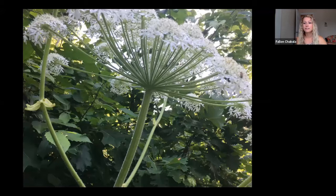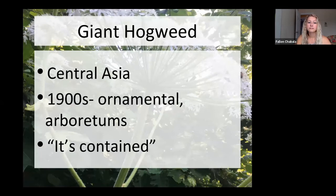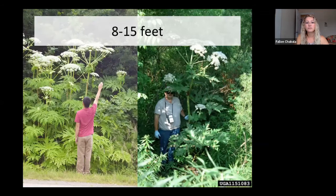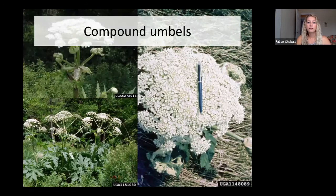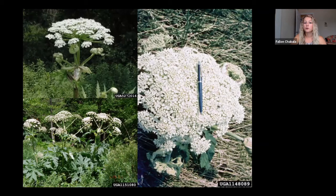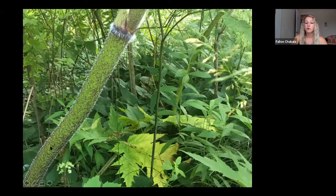Now I'll start going more in depth on the invasive species I'll cover. This is giant hogweed. It is from the Central Asia area and was first brought over in the 1800s as an ornamental in an arboretum. However, it did escape. It's called giant hogweed for a reason — it can reach heights of 15 feet tall. It has compound lobed leaves that alternate on the stem, and compound umbels for its flowers, where a group of flowers come together to make a massive flower head. It has coarse hairs and purple blotches on its stem, becoming more prevalent towards the base.